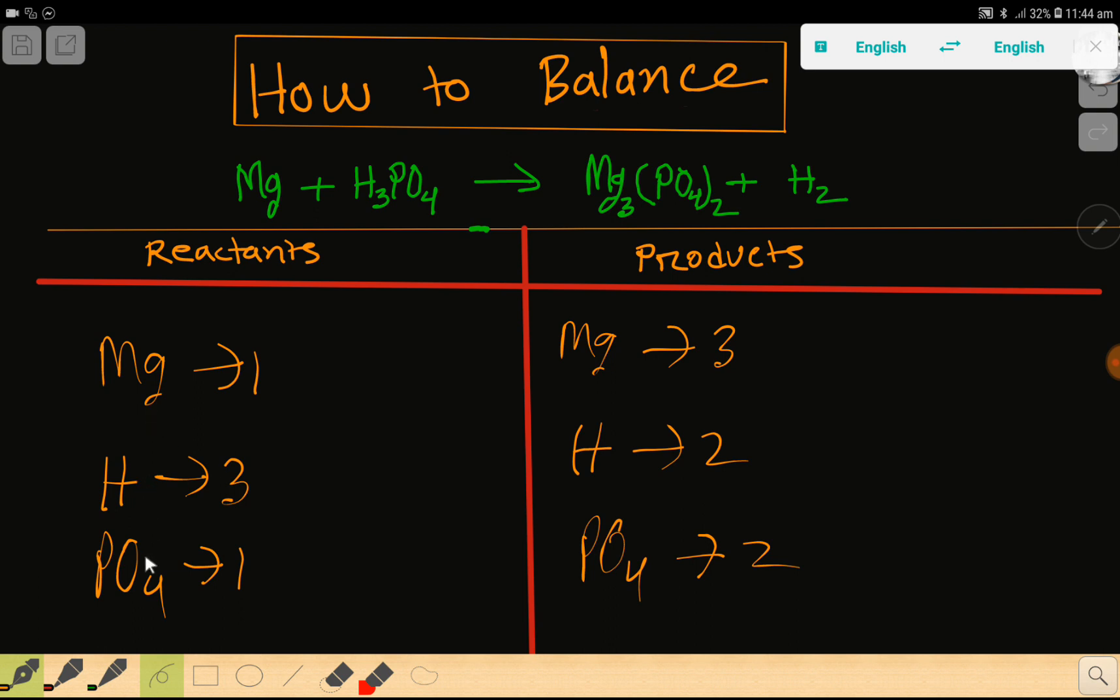So here magnesium is 1 and magnesium is 3. To balance the magnesium, I can multiply here by 3, that gives me 3. This 3 must come before this magnesium, right there.